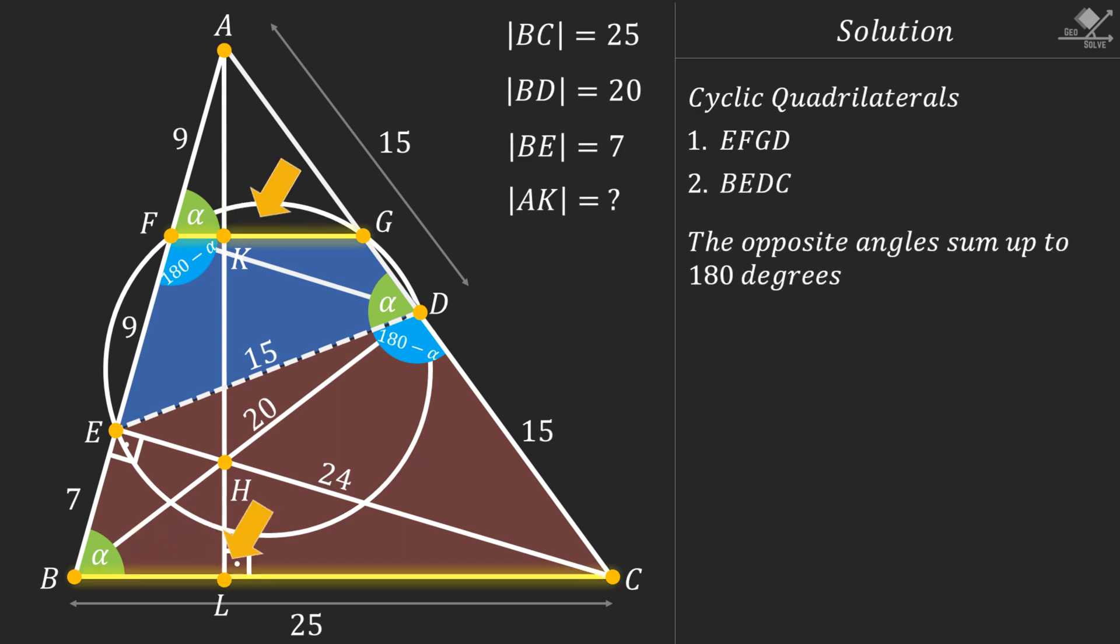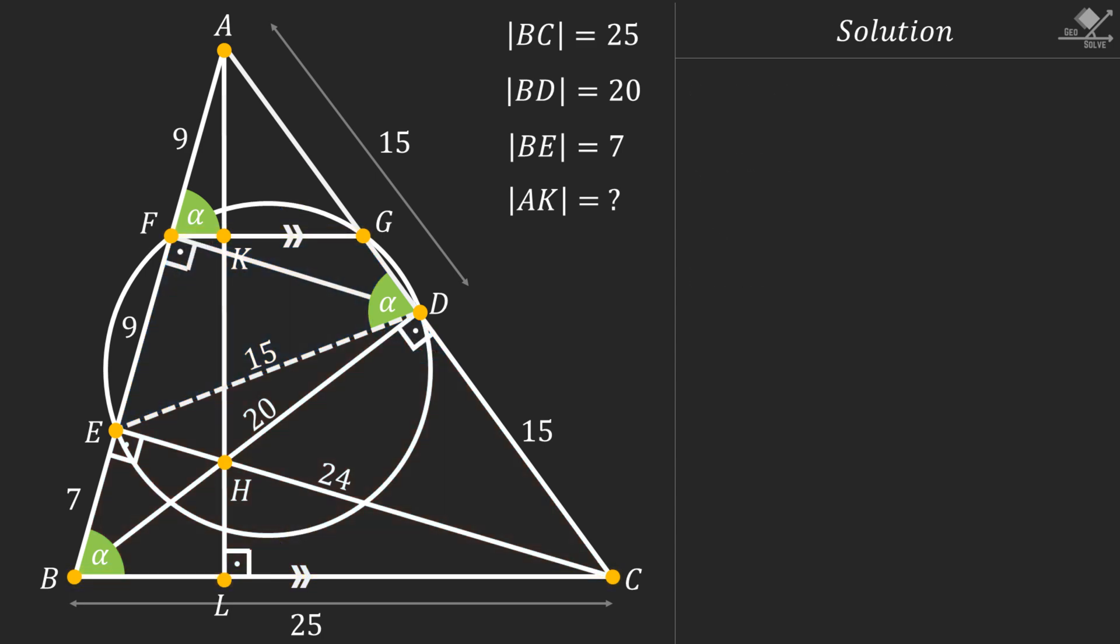After this we are one step closer to finding our missing length AK. To do that let's focus on triangle AFK and triangle ABL. Since we showed earlier that the bottom lines of these two triangles are parallel, we can say that they are similar triangles by angle angle rule. So we can write this similarity ratio of AF over AB equals AK over AL. From here AK will be equal to AF times AL over AB.